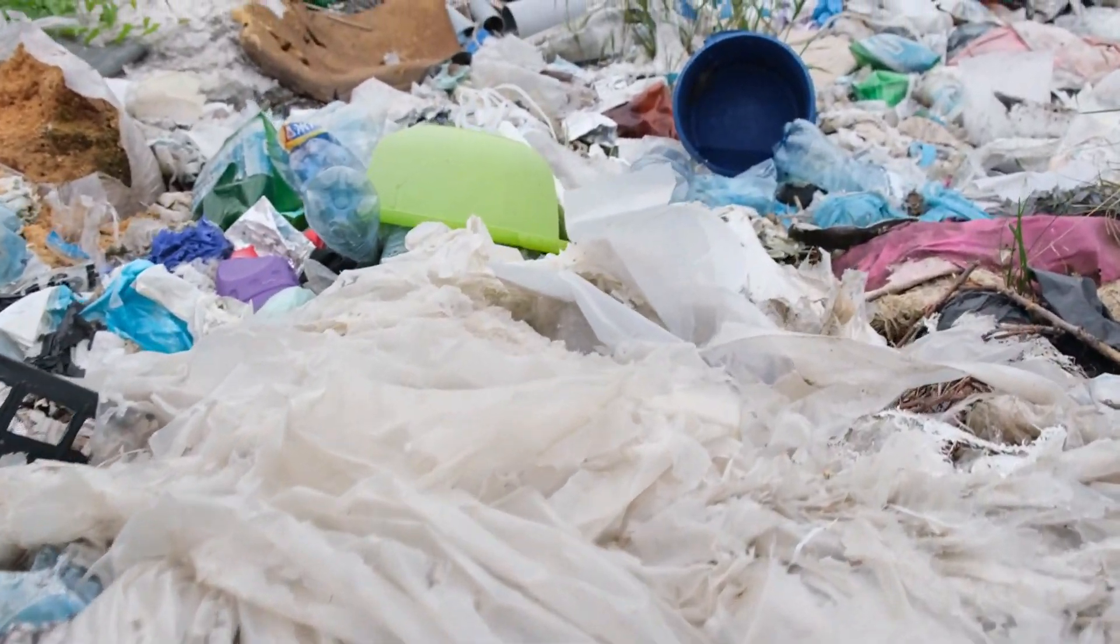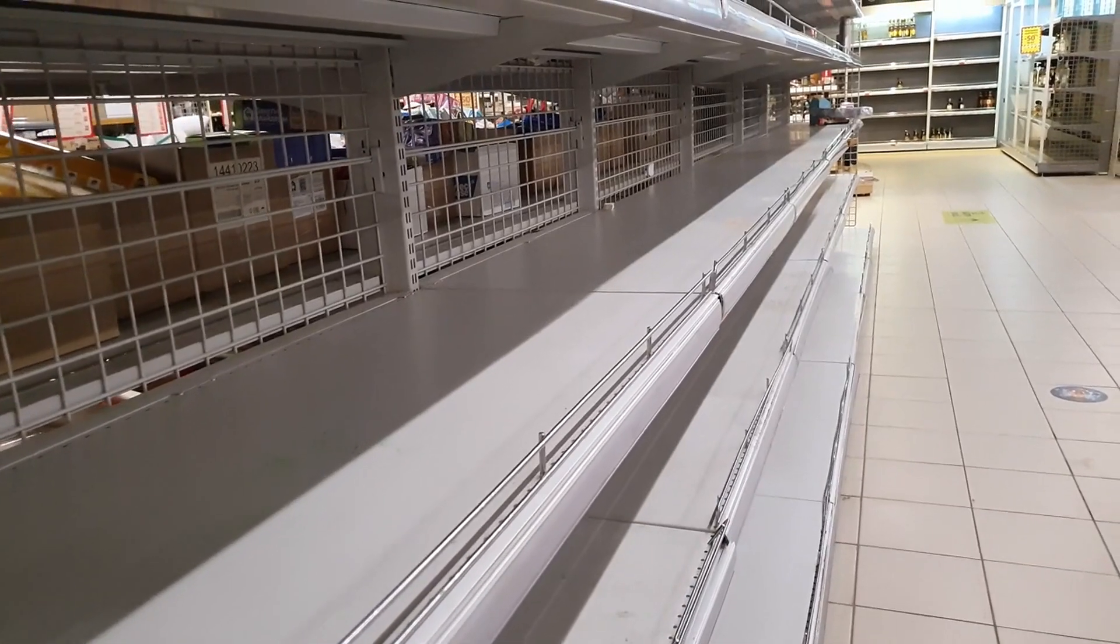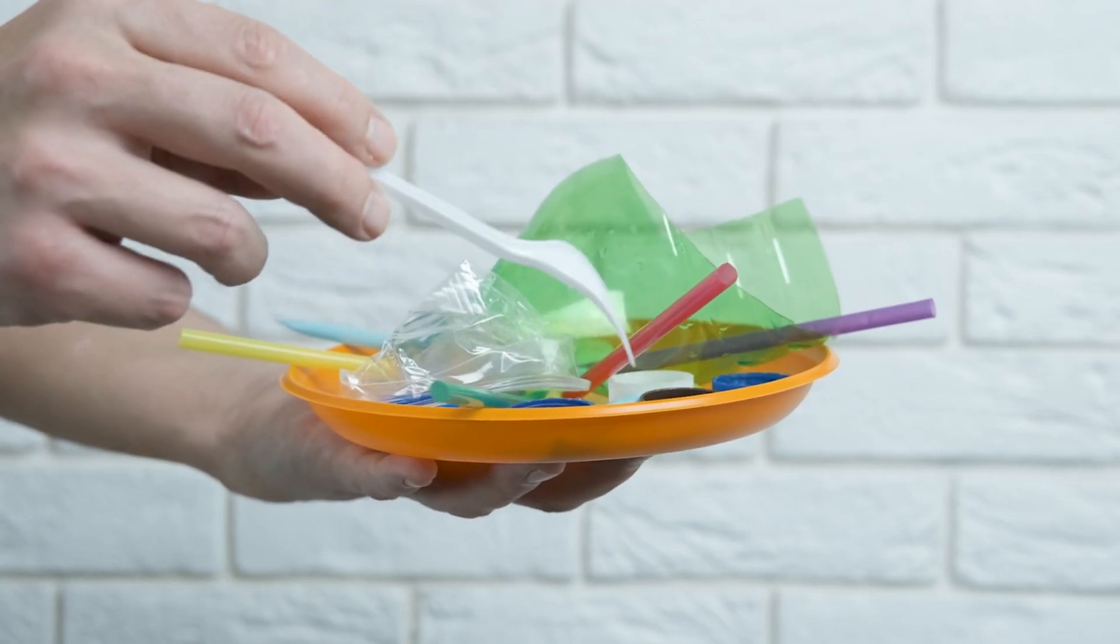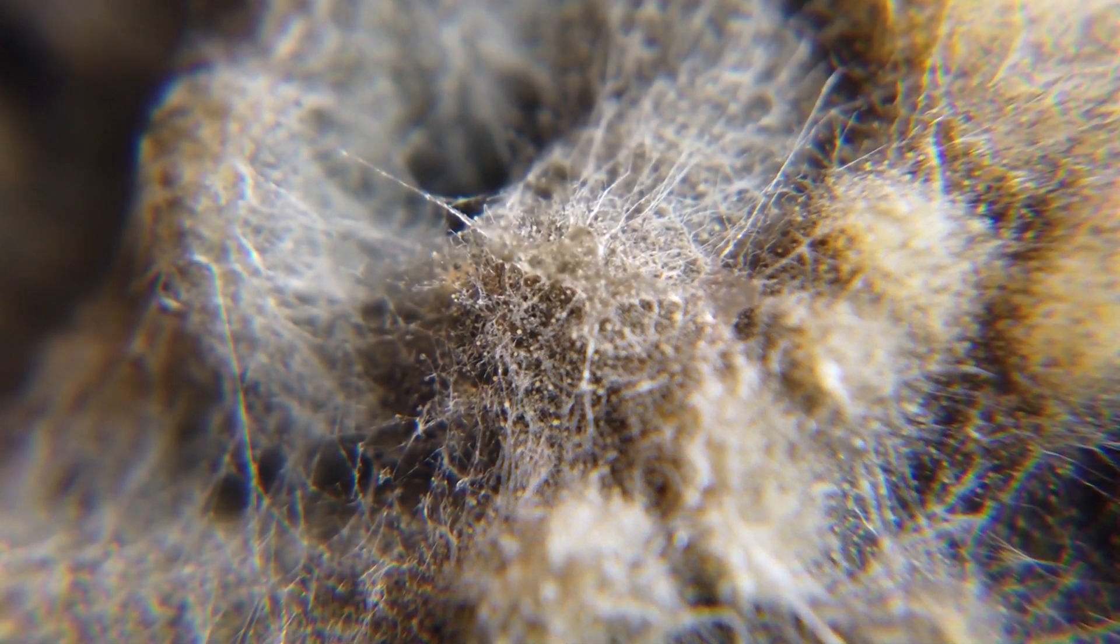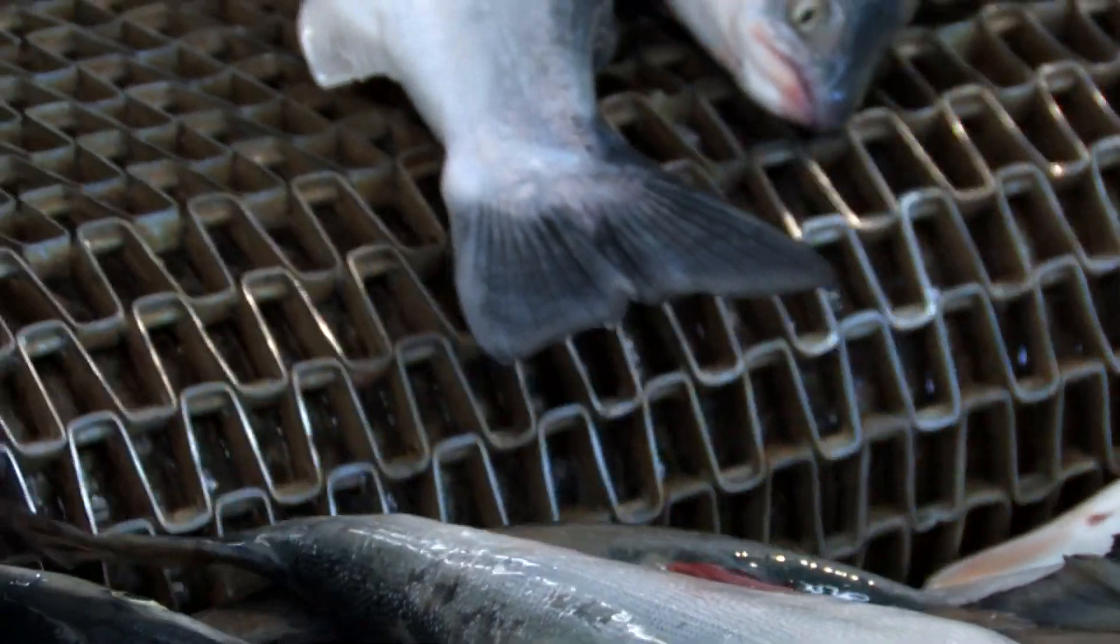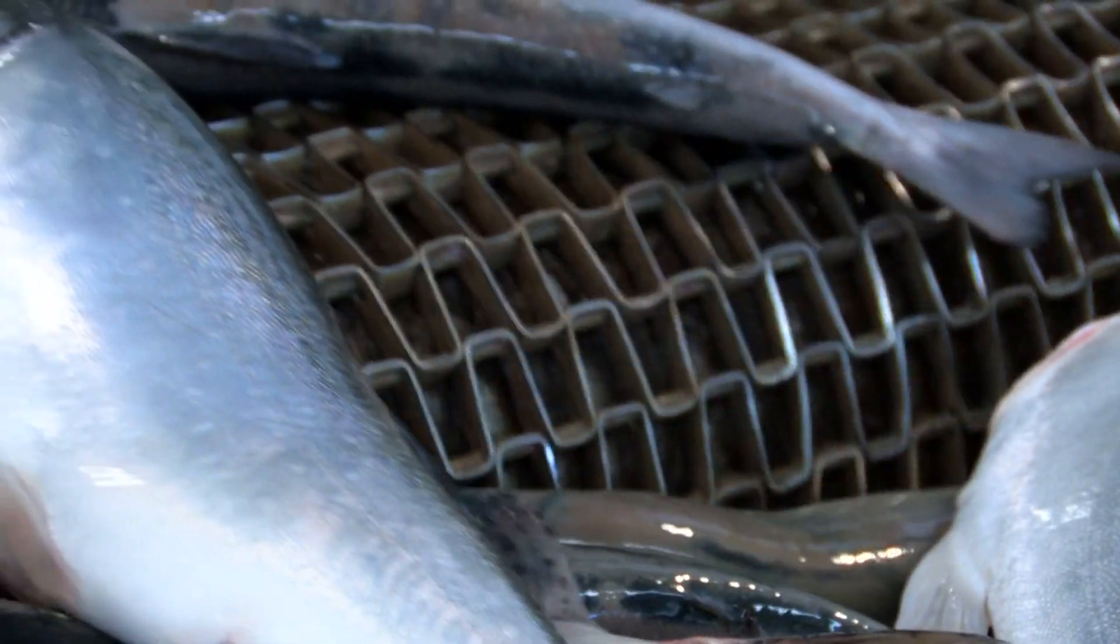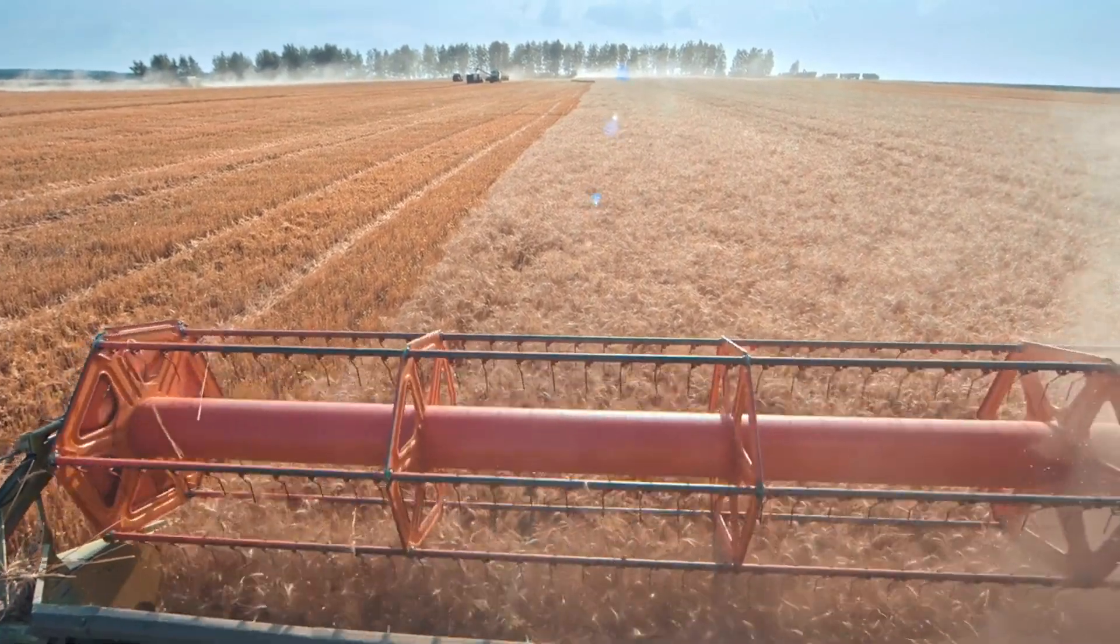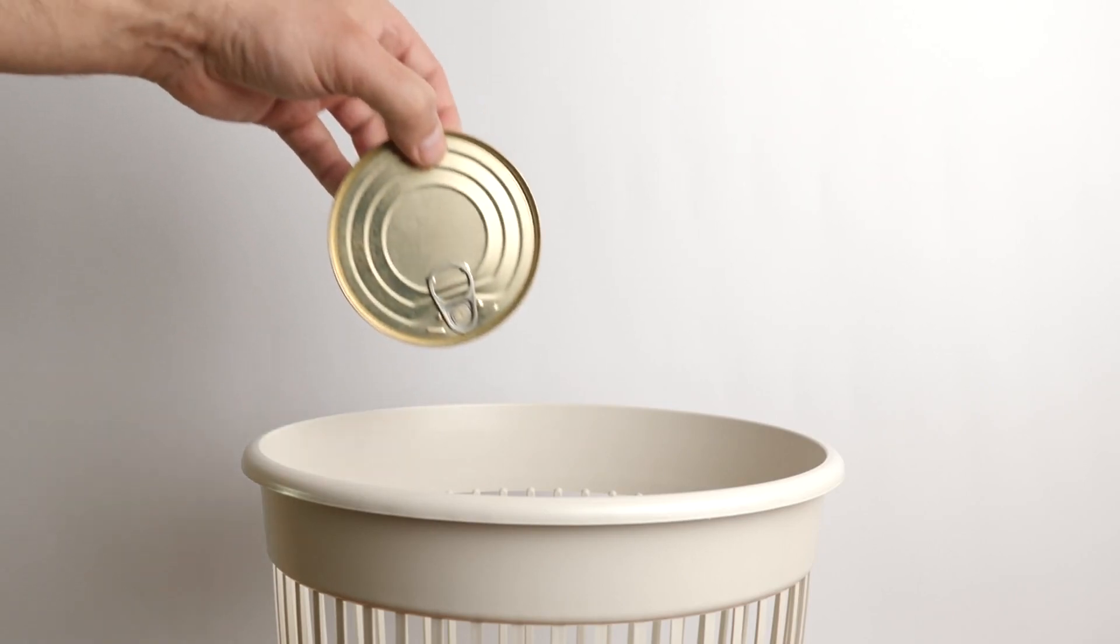The global food supply chain would begin to break down within hours. Modern food distribution relies heavily on plastic for packaging, transportation, and storage. Supermarket shelves would quickly empty as food spoils without proper containment. The fishing industry would grind to a halt, as most modern fishing nets and equipment contain plastic. Agricultural machinery, with their plastic components gone, would sit idle in fields. Food waste would skyrocket as preservation becomes a challenge.